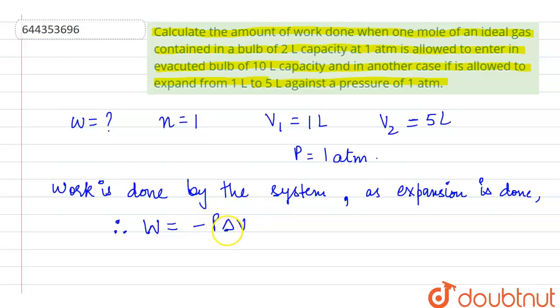Because if the work is done by the system, the sign convention is negative for the work done. So P delta V here, P is for pressure and delta V is the change in volume. So pressure is 1, so 1 atmosphere into delta V is the change in volume. So final minus initial, V₂ minus V₁.